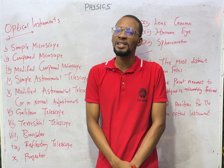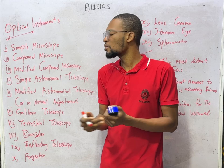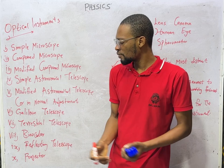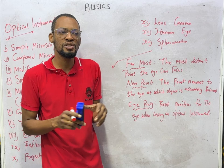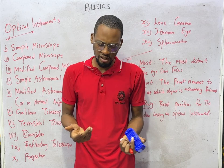Now ladies and gentlemen, the optical instruments we shall be looking at in this episode are: a simple microscope, compound microscope, modified compound microscope, modified astronomical telescope, a telescope under normal adjustment, a terrestrial telescope, a binocular, a reflecting telescope, a projector, then the lens camera. The human eye is an optical instrument — it sees visible light and it helps you to view objects around. Then the spherometer. These are optical instruments.